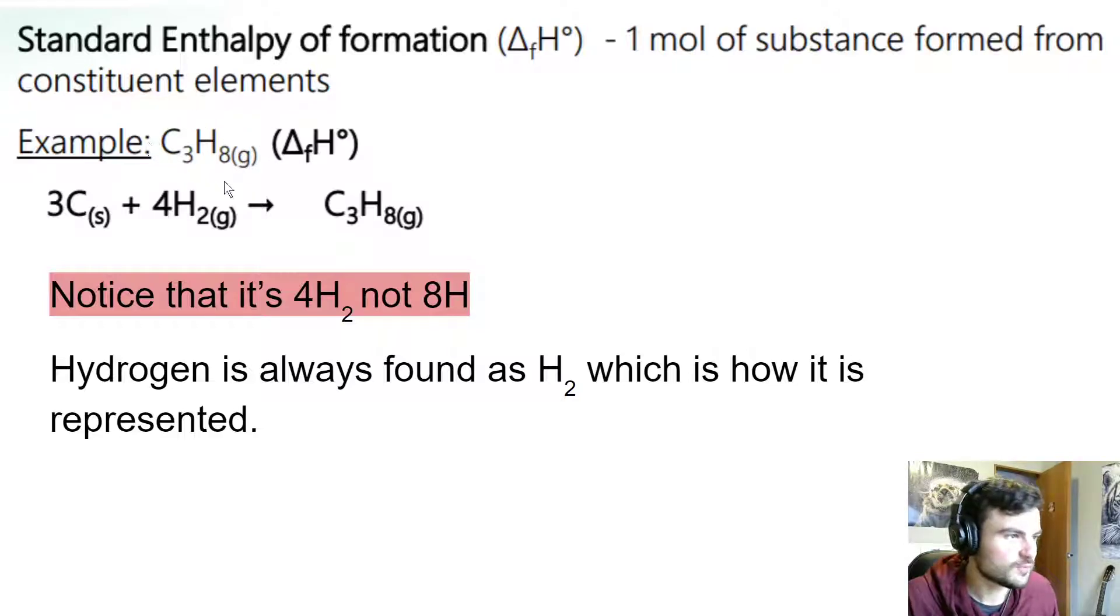Here we have propane C3H8 and we're trying to write out an equation to show the standard enthalpy of formation of propane. When we form propane, we're going to make it from its base elements. Its base elements in this case is carbon and hydrogen. Carbon is found in nature as solid carbon and we have three of them, so we have three lots of carbon solid.